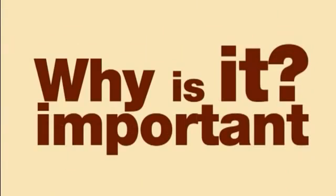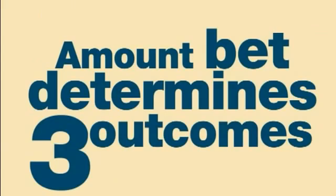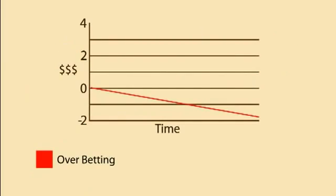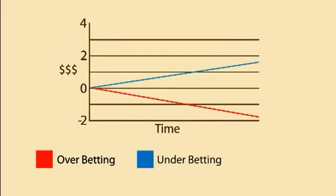Why is this important? Because in theory, if you bet suboptimally — in other words, betting more or less than the Kelly-dictated number — in the long run your bankroll will suffer. Over-betting your bankroll will make you win less or even lose money. Under-betting your bankroll will not maximize your earnings. The Kelly formula gives you the optimal bet size.